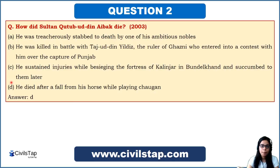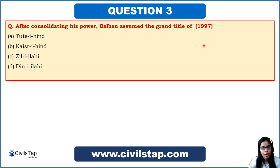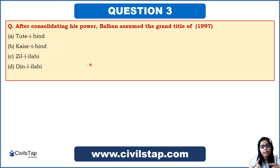A question from the 1997 prelims asks: after consolidating his power, Balban assumed the grand title of — options being Tuti-e-Hind, Kaiser-e-Hind, Zille Lahi, or Deen Ilahi. As discussed during the study of Balban, he assumed the grand title of Zille Lahi. So the answer is option C. These were the questions from the Mamluk dynasty and Turkish administration.